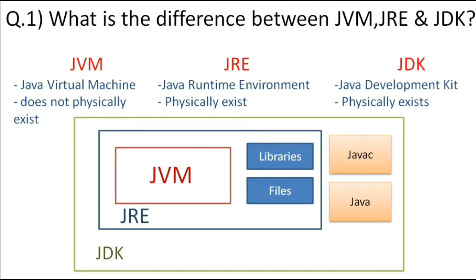So to summarize: JVM is the virtual machine on which the application runs. JRE is a package of JVM and the files and libraries needed to run the application. JDK has JRE plus other tools like javac, java, etc. Another key difference is that JVM is virtual, but JDK and JRE physically exist. Now let's move to the next question.